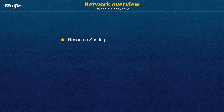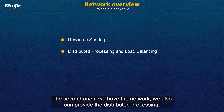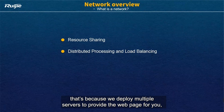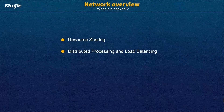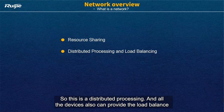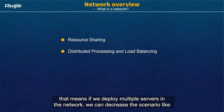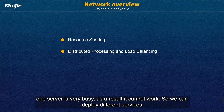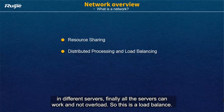The second characteristic is distributed processing. For example, now everyone opens a Google website and we can all see the same page. That is because we deploy multiple servers to provide the web page, and the devices will choose the server closest to you to provide the service. This is distributed processing. All the devices can also provide load balancing — that means if we deploy multiple servers in the network, we can decrease the scenario where one server is very busy and cannot work. We deploy different servers so all servers can work without being overloaded.